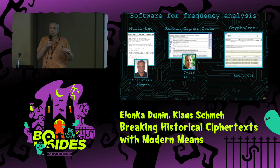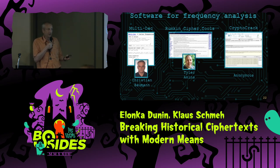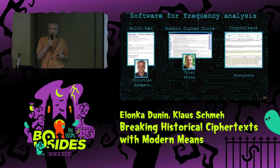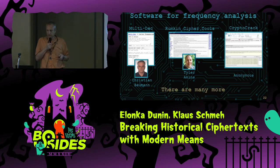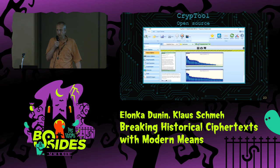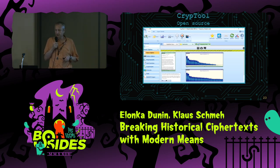Something like this can be done by hand, but today it makes sense to use a computer program. Frequency analysis with a computer is not very difficult because there are quite a few programs around — for example, Multideck by Christian Baumann from Austria, or the Rumpkin cipher tools by Tyler Akins, all available for free on the internet, and also CryptoCrack, created by an anonymous developer group. In my view, the best tool for cryptanalysis of old ciphers is Cryptool — open source software created in Germany. It's been around for 25 years and is a very good tool with a lot of crypto and cryptanalysis functions.